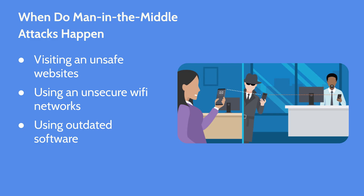Man-in-the-middle attacks can happen when you're visiting an unsafe website — one that doesn't have the proper safety protocols, making your connection incredibly vulnerable. It can also happen when you're using an unsecure Wi-Fi network that is not password-protected, doesn't have proper encryption or safety measures set up, leaving that connection wide open for someone to intercept.